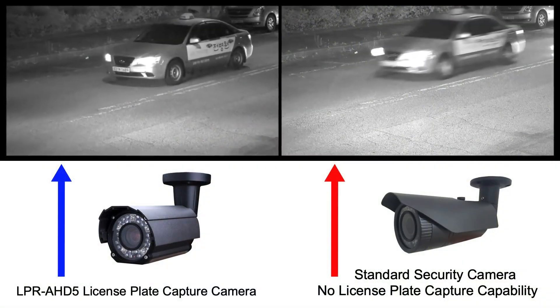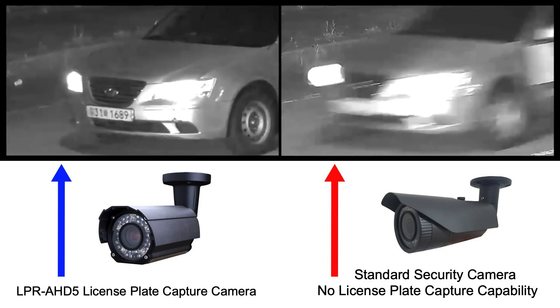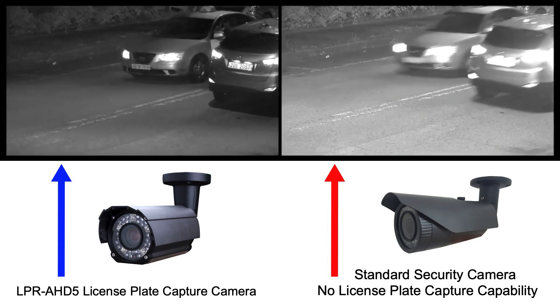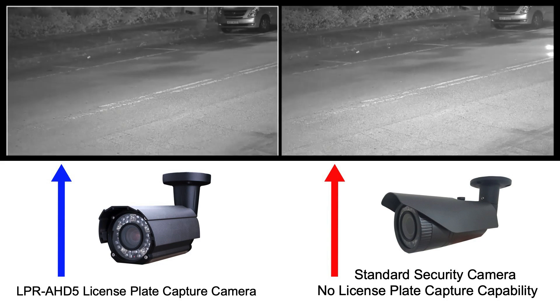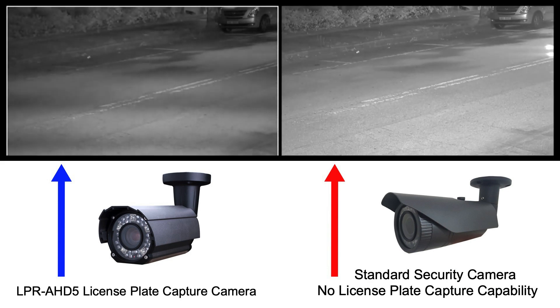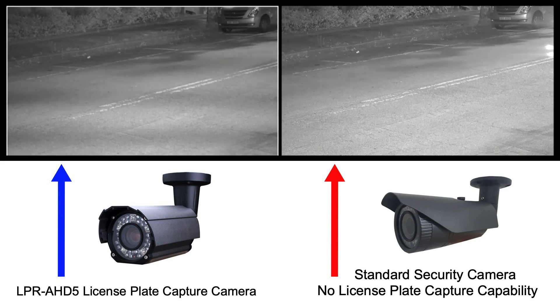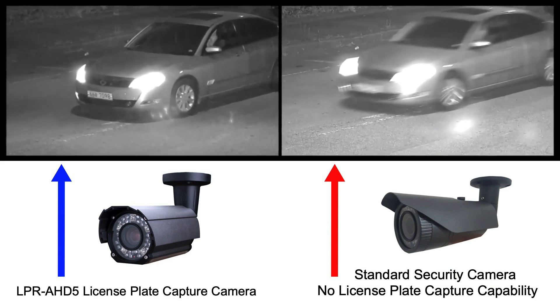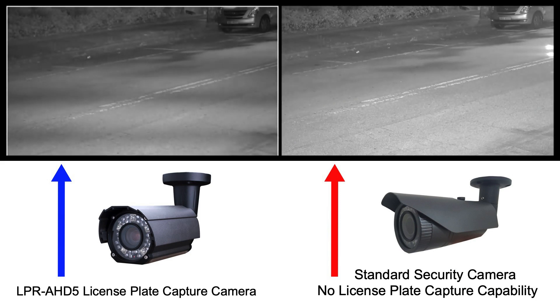These Viewtron LPR systems can integrate with gate systems. Now let's take a look at some demo video — I'll show you demos of both a license plate reader camera and a license plate capture camera. Here is some video surveillance footage recorded using our LPR-AHD5 license plate capture camera. These videos were recorded with the camera connected to a Viewtron Hybrid BNC DVR. The video on the left is the license plate capture camera and the video on the right was recorded using a standard security camera that has no license plate capture capability. Note that this is a 1080p or 2 megapixel resolution BNC camera that connects to the DVR using RG-59 coax cable.